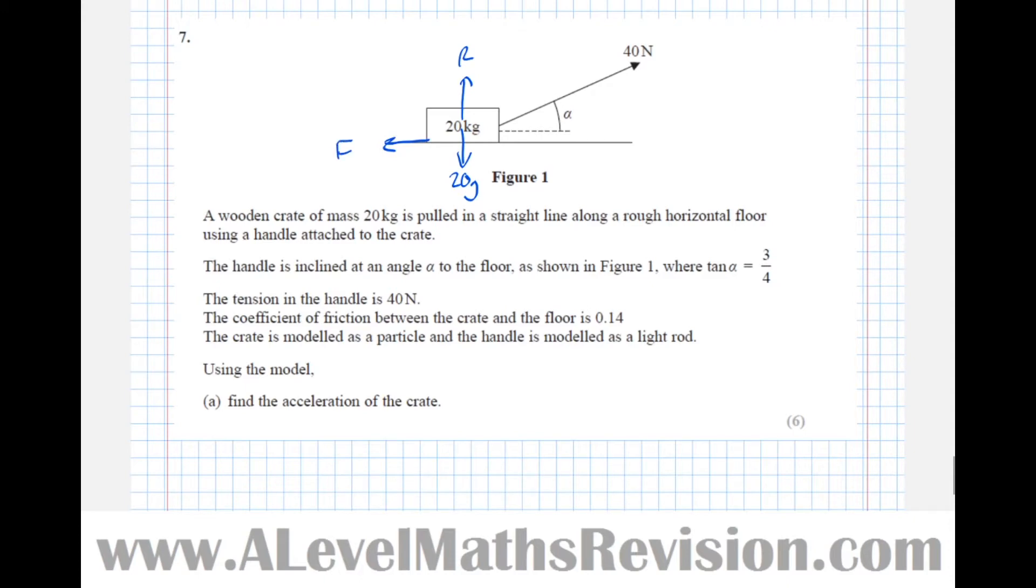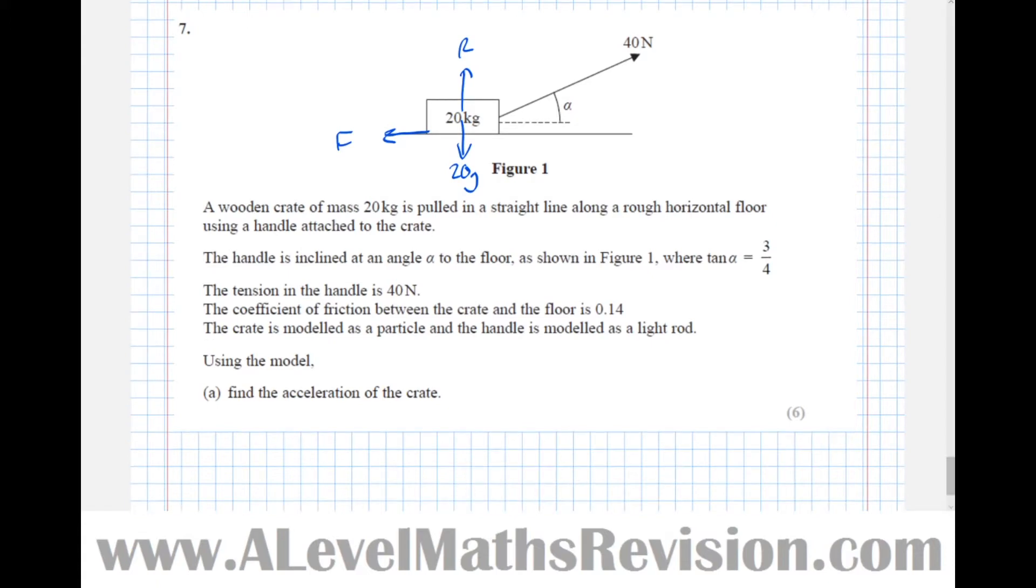So it says the handle is inclined at an angle of alpha to the floor as shown in figure 1 where tan alpha is 3 quarters. Well at this point I'd stop reading and work out the sin and cos of the angle as well. So this bit of information here just a little bit of side working. Well tan alpha is opposite over adjacent so opposite over adjacent and we can see that that's a 3 4 5 triangle.